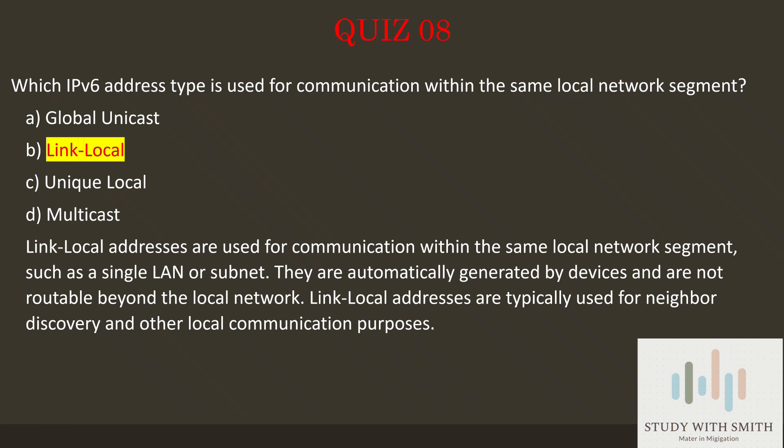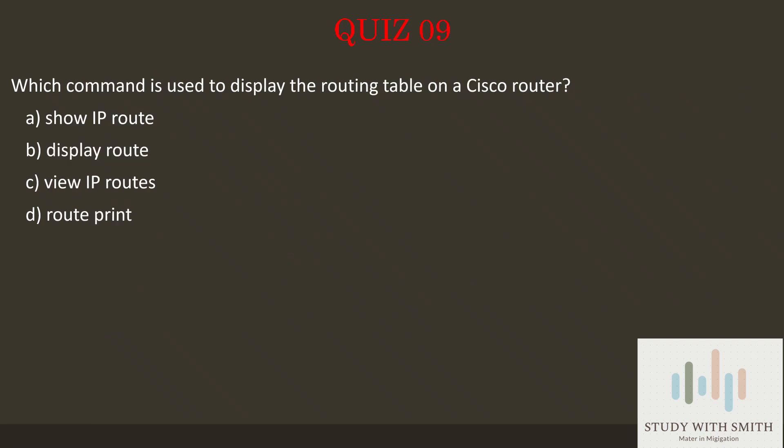Question 9: Which command is used to display the routing table on a Cisco router? The answer is A: Show IP Route. The 'show ip route' command is used on Cisco routers to display the routing table, showing the routes that the router is aware of and the next hop information for each route. This command is a fundamental tool for network administrators to diagnose and troubleshoot routing issues.